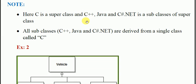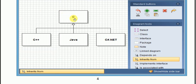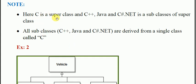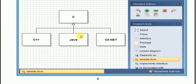Note: C is a super class and C++, Java, and C Sharp are subclasses of the super class. All the subclasses — C++, Java, and C Sharp — are derived from a single class called C. The properties are derived from C; the properties are stored in C. So this is a simple example of generalization.